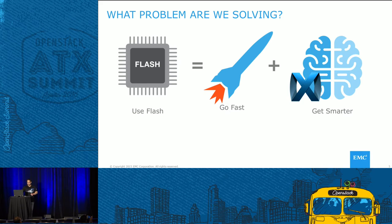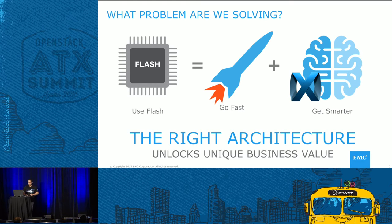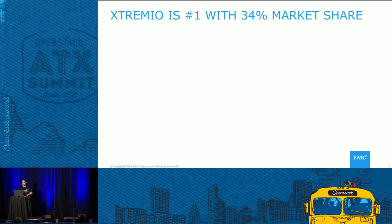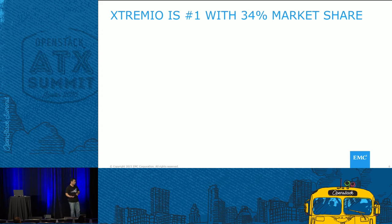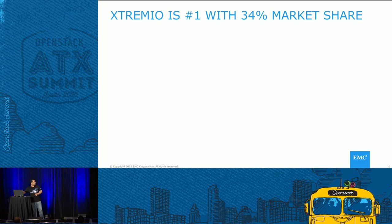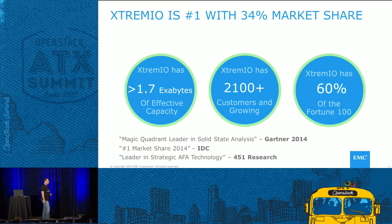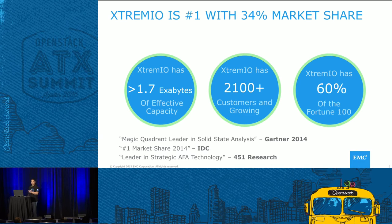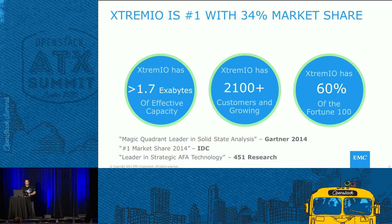XtremeIO was designed with that in mind. It's been on the market for a little over two years. It was pretty much the last all-flash storage to come to market — many other competing products were already there. Despite that, XtremeIO is now the number one all-flash storage today, with 34% market share in 2014. In 2015, we're estimating somewhere close to 40% market share — that's more than number one, two, and three put together. 60% of Fortune 100 customers use XtremeIO. Although we took time to design this storage right, we were last to market, but our approach worked.